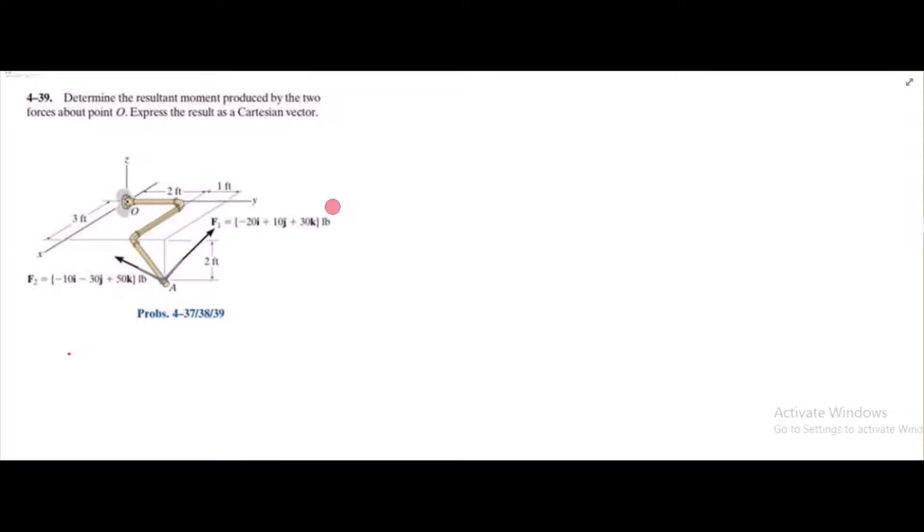According to this problem, we have to determine the resultant moment about point O and express the result as a Cartesian vector. Since we already have been given the forces in Cartesian vector form, forces F1 and F2, now we just have to determine the moment arm.